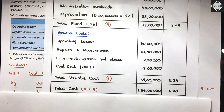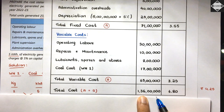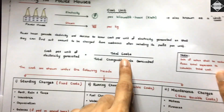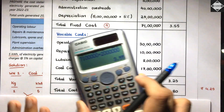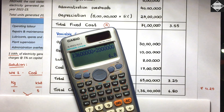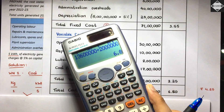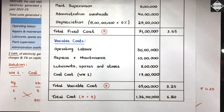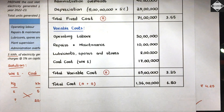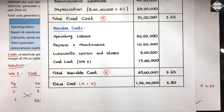Total cost = Fixed cost ₹71 lakhs + Variable cost ₹65 lakhs = ₹1 crore 36 lakhs. Cost per unit of electricity generated = ₹1,36,00,000 ÷ 20 lakh units = ₹6.80 per kilowatt hour. This can be shown in the statement itself or separately with the formula — both formats are acceptable.